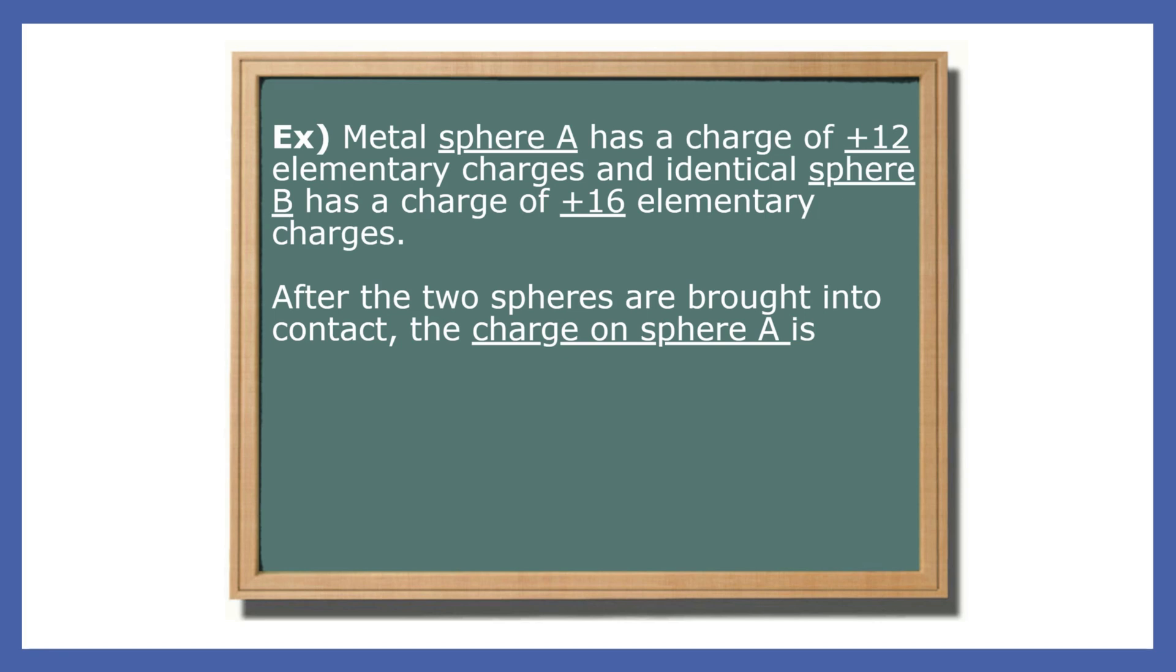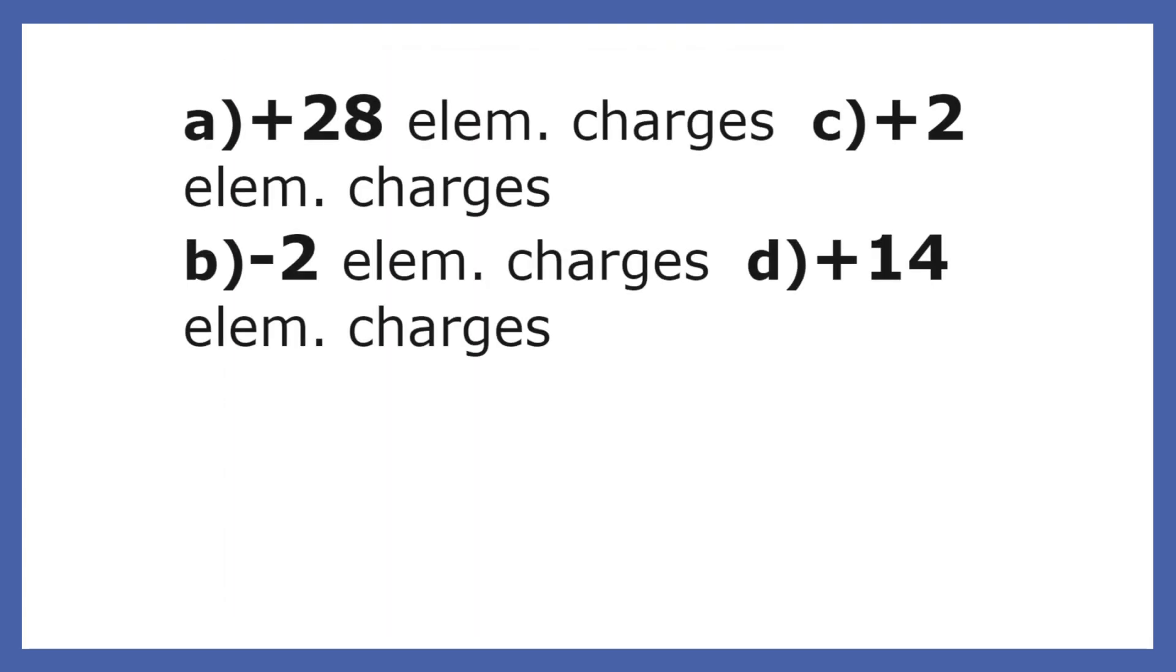Let's take an example. We've got metal sphere A with a positive 12 charge and metal sphere B with a charge of positive 16. After the two charges are brought into contact, what's the charge on sphere A? Well, we can see that the total charge is positive 28. The answer is positive 14.